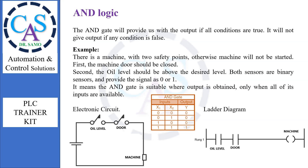From the electronic circuit, we can see that the circuit is not complete if any one switch is off. For completion, both switches should be connected. Similarly, from the ladder diagram, both contacts should be connected or closed to switch on the machine.